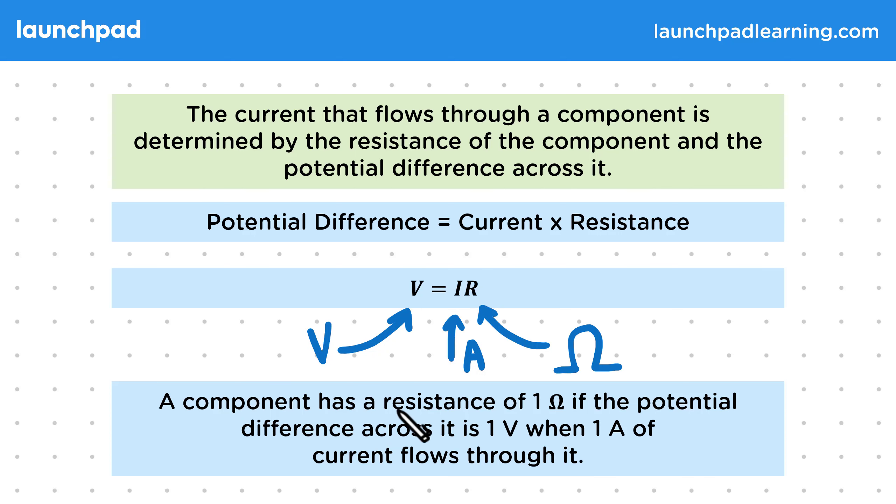A component has a resistance of 1 ohm if the potential difference across it is 1 volt when 1 amp of current flows through it.